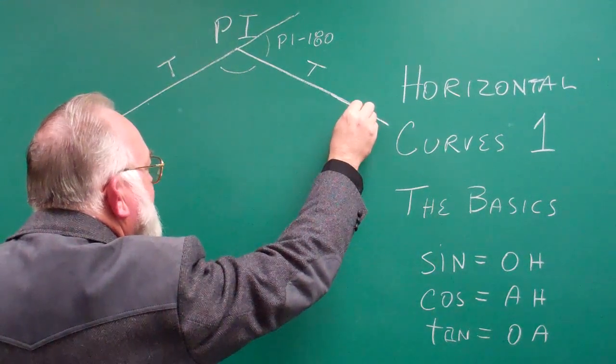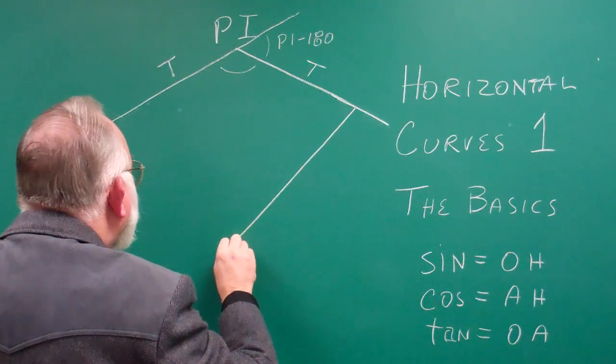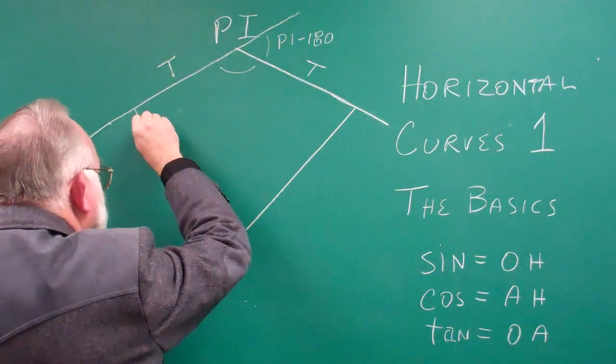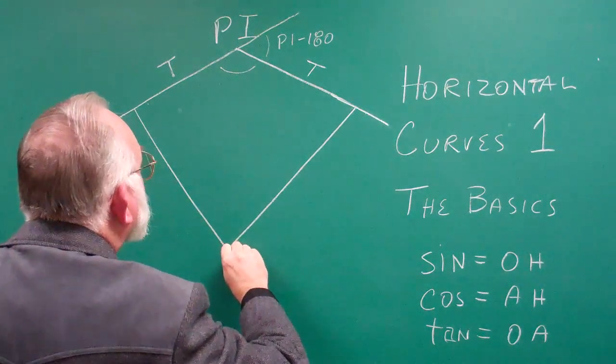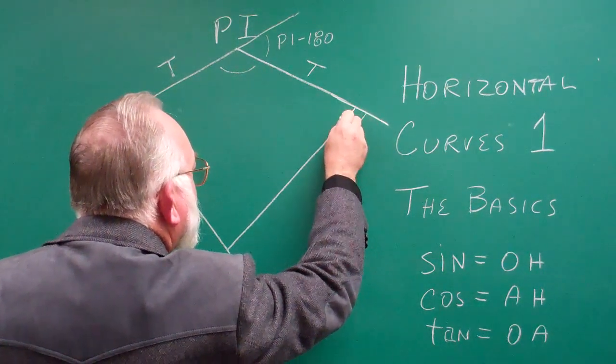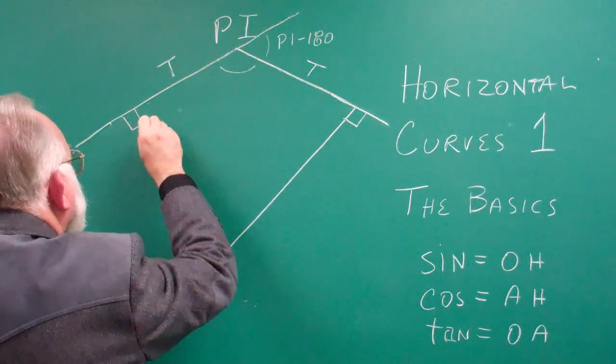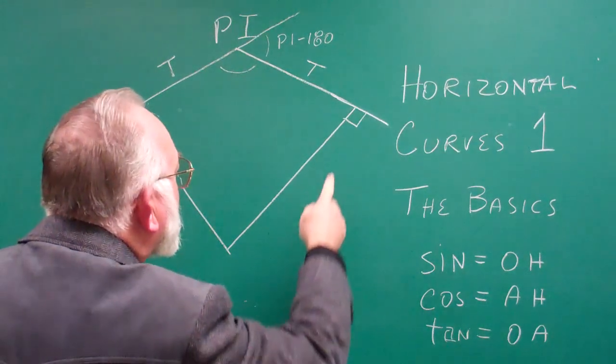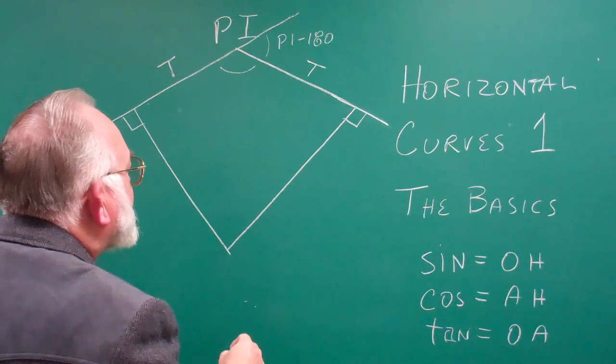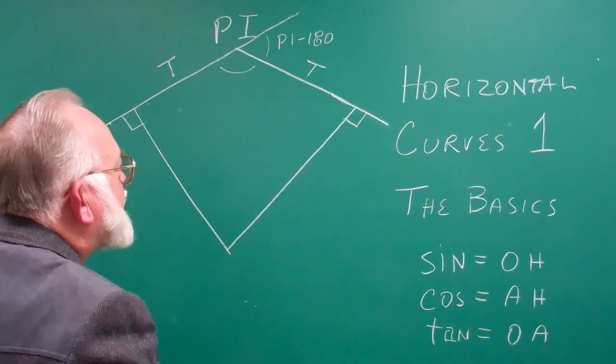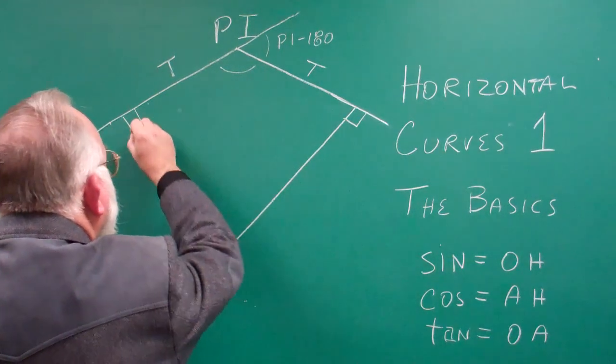So let's just draw an imaginary radius here and a radius here. We're going to meet in the middle, and it's not exactly perfectly straight, but it's good enough for these purposes. Now you've got a closed figure and you have two right angles here.